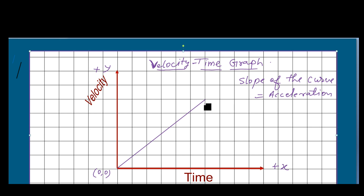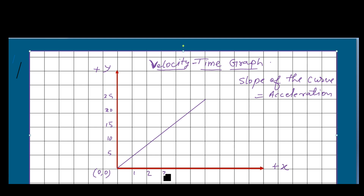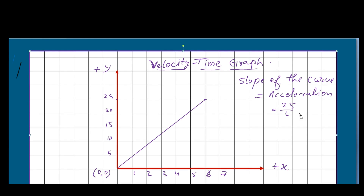The y-axis has values 5, 10, 15, 20, 25 and so on, and the x-axis shows 1 second, 2 seconds, 3, 4, 5, 6, 7 seconds and so on. To find the slope of this curve, we divide the y-intercept by the x-intercept. Suppose the y-intercept is 25 and the x-intercept is 6, so the slope of the curve will be 25 divided by 6.